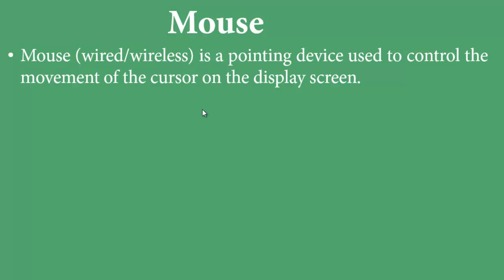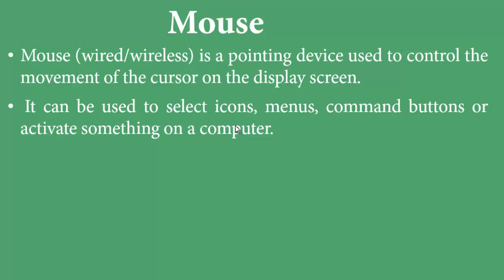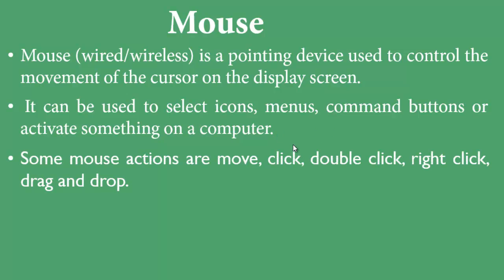The mouse is a pointing device used to control the movement of the cursor on the display screen. It can be used to select icons, menus, and command buttons, or to activate something on your computer. Mouse actions include move, click, double-click, right-click, and drag-and-drop.